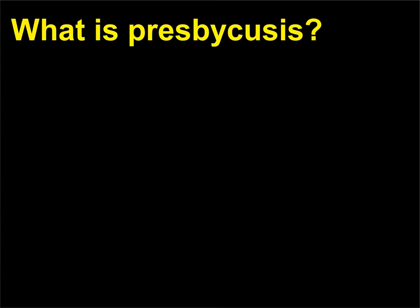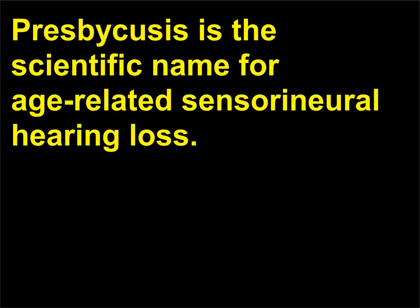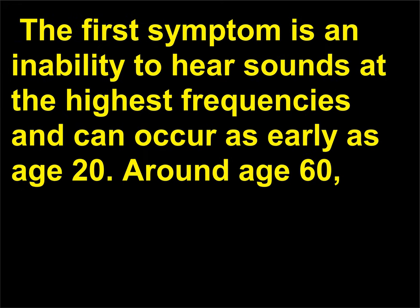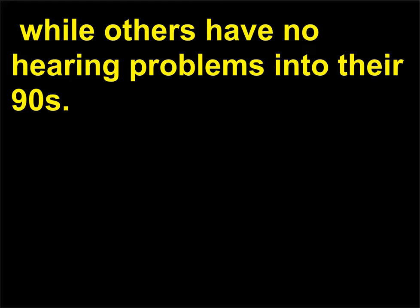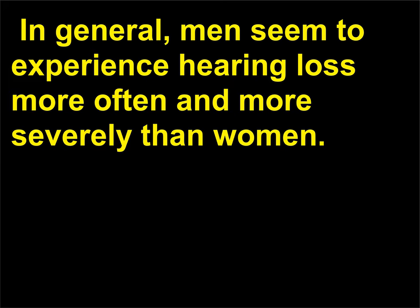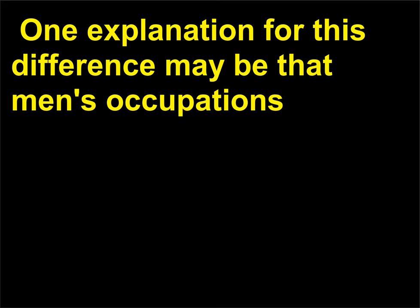What is presbycusis? Presbycusis is the scientific name for age-related sensorineural hearing loss. The first symptom is an inability to hear sounds at the highest frequencies and can occur as early as age 20. Around age 60, there is considerable variation in how well people hear. Some have had significant loss of hearing since age 50, while others have no hearing problems into their 90s. In general, men seem to experience hearing loss more often and more severely than women, possibly because men's occupations are usually associated with prolonged exposure to louder noises.